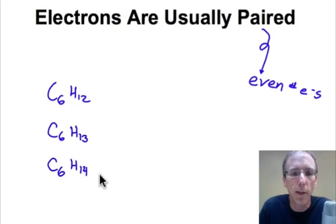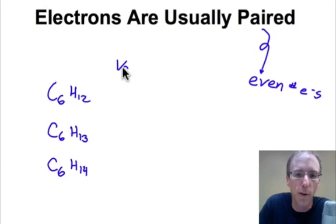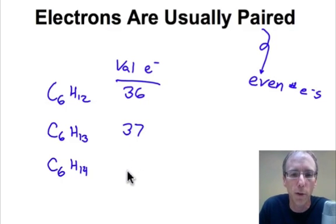And we'll continue the series back to an even number, C6H14. So in terms of numbers of valence electrons, the first compound is going to have 36 valence electrons. Then the second one will have 37.